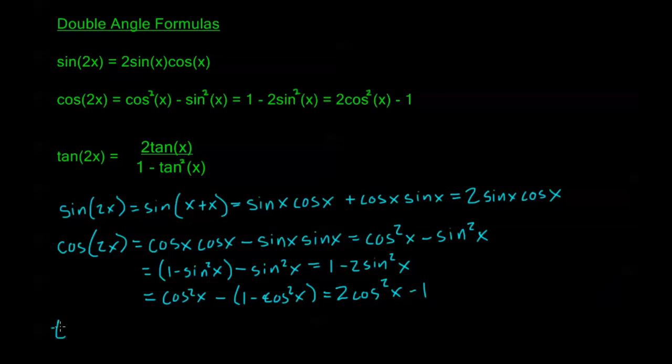Now for tangent, we're just plugging directly into the tangent addition formula. The tangent addition formula gives us tangent x plus tangent x on the top, and on the bottom 1 minus tangent x times tangent x. So we simply have 2 tangent x over 1 minus tangent squared x.